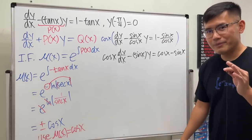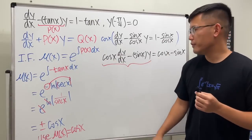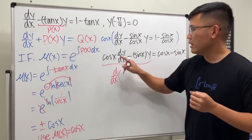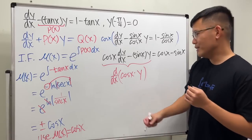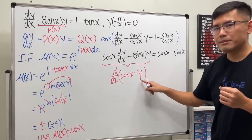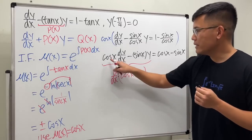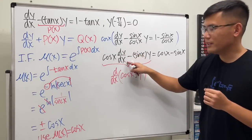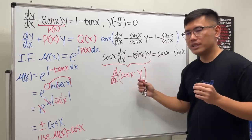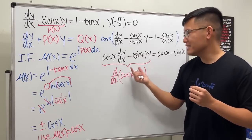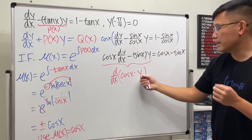This is the cool thing about the integrating factor: the left-hand side is actually the derivative of cosine x times y. Using the product rule, d/dx of (cosine x · y) gives cosine x times dy/dx plus y times the derivative of cosine x, which is negative sine x. So the left side is exactly d/dx[cos(x) · y].